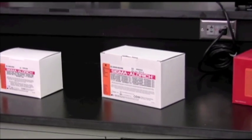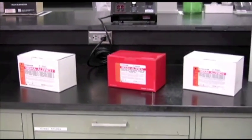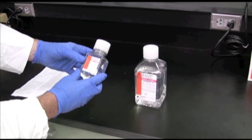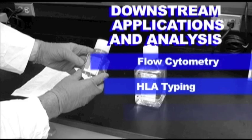The Sigma-Aldrich AccuSpin system, Histopac 1077, is a proven system for separating lymphocytes and other mononuclear cells from whole blood. The separated mononuclear cells can then be used for downstream applications and analysis such as flow cytometry, HLA typing, and many others.